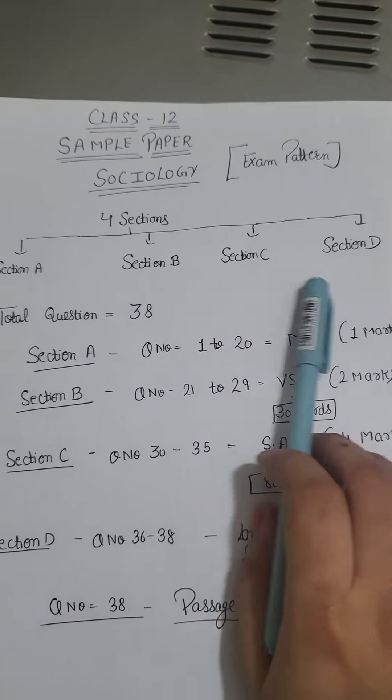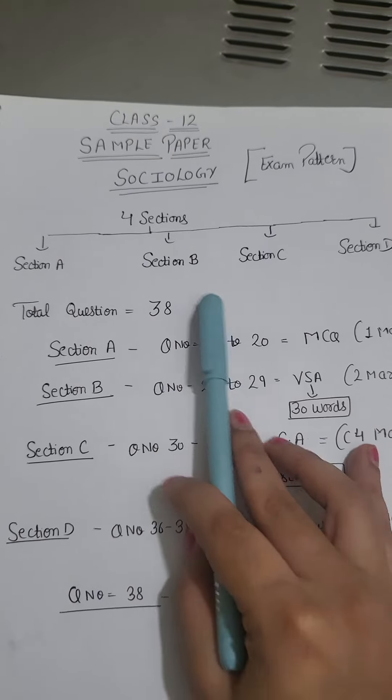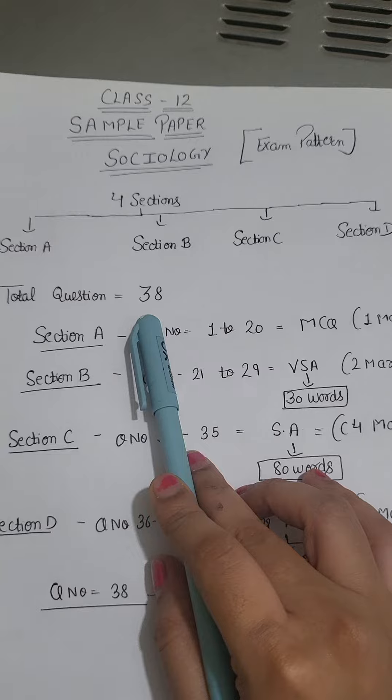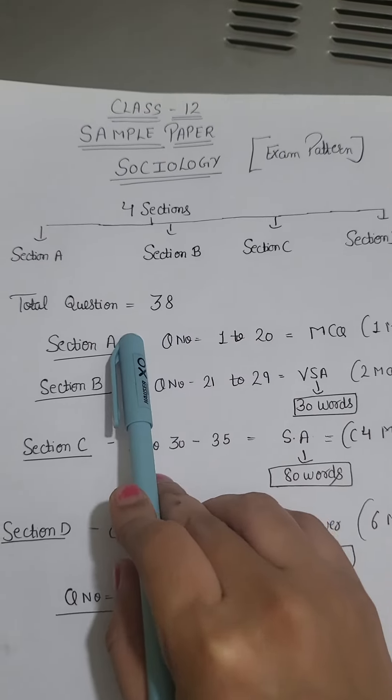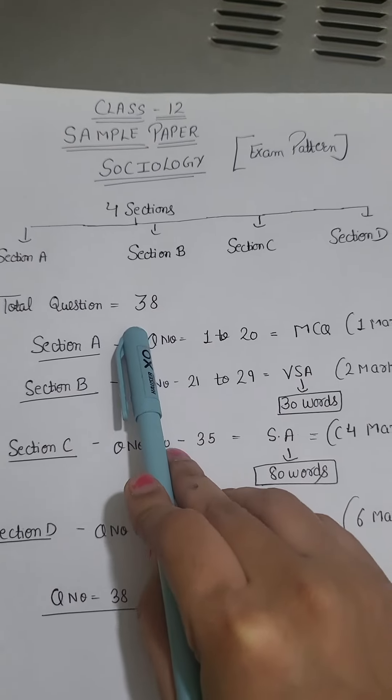There are 4 sections - section A, B, C and D. Total 38 questions. There will be no overall choice, but internal choice is available. It is not that there will be 40 questions with full choice.